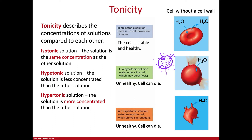Hypo means underneath or below. For example, a hypodermic needle goes below underneath the skin, and hypothermia means you have too little — below — heat. So hypotonic means the concentration is below the other one. Hyper, on the other hand, means above or too much — more. Like a hyperactive person has too much energy, more energy.